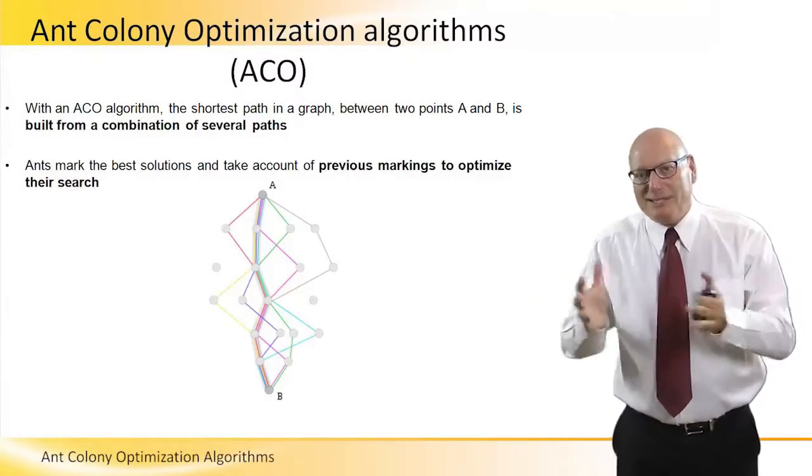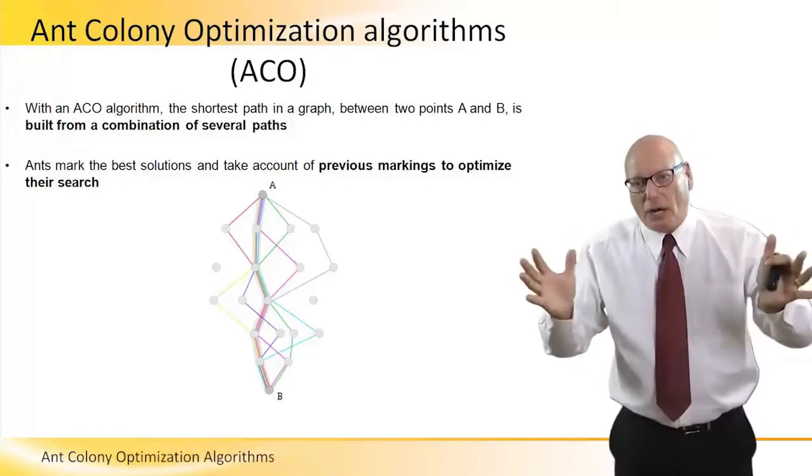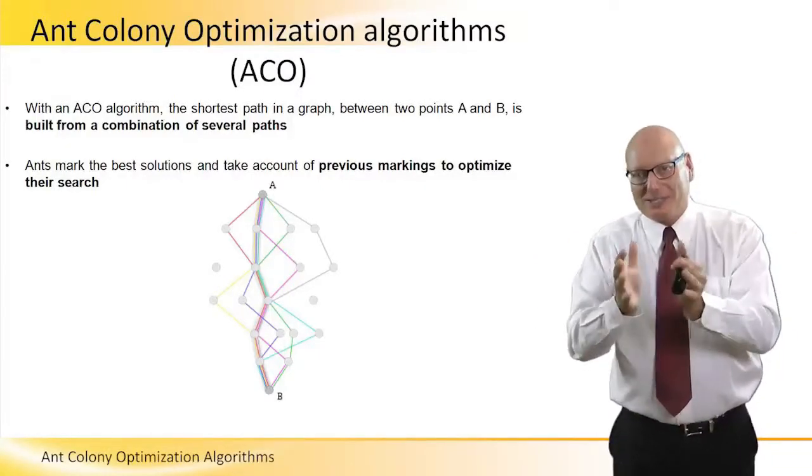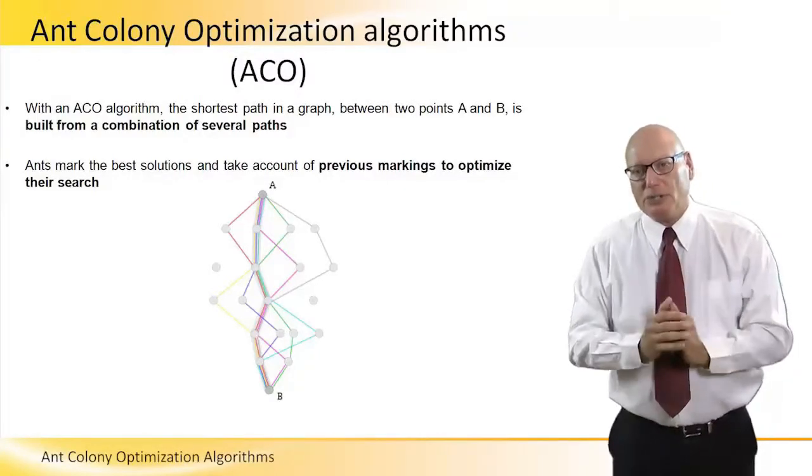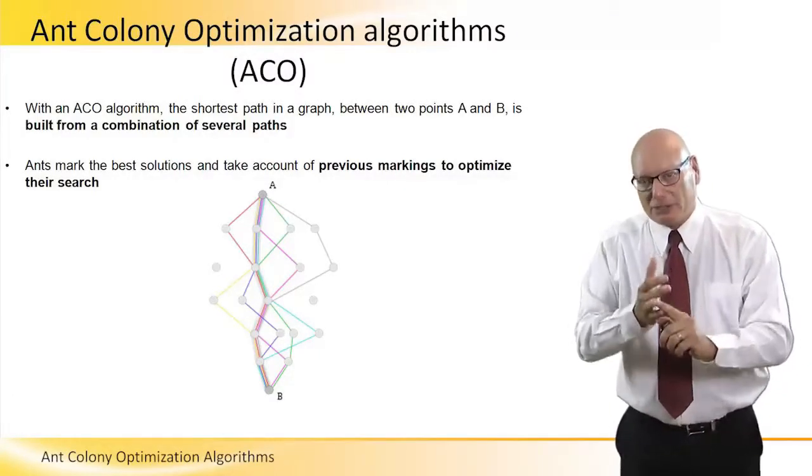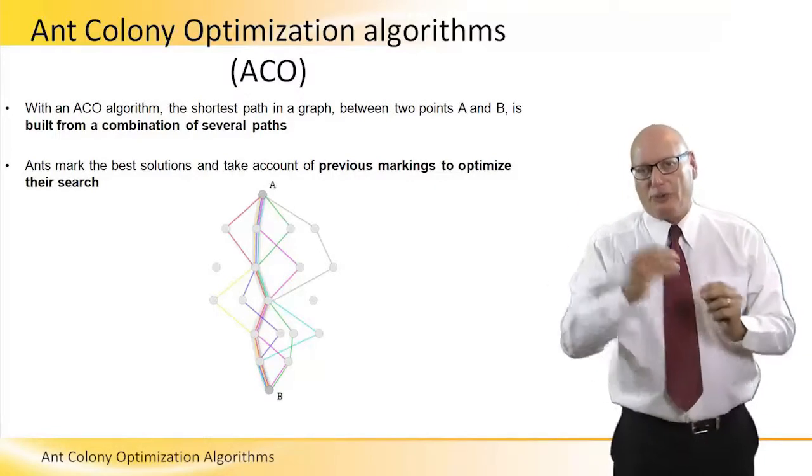Eventually, all these random paths are converged to a single most effective path, meaning the least amount of energy was used, and the shortest time that it took to go from point A to point B.